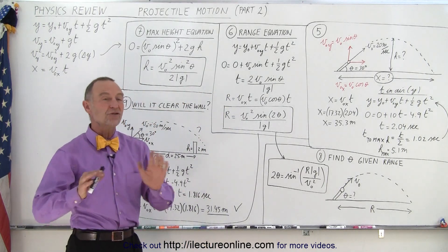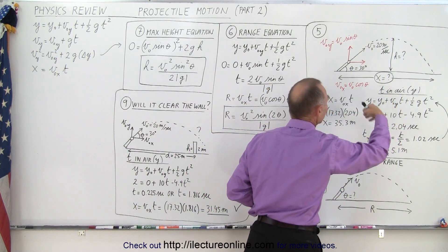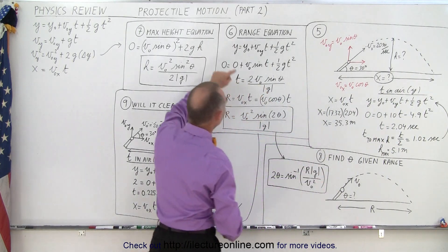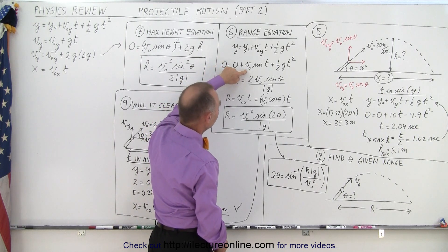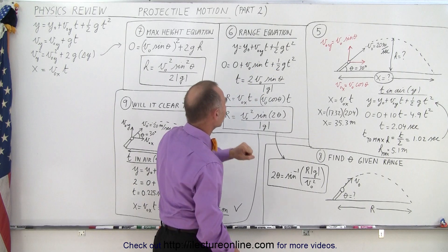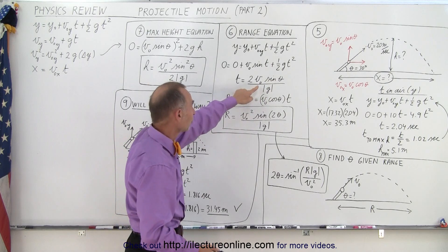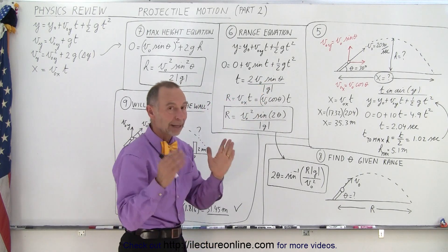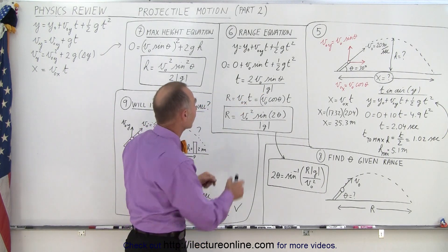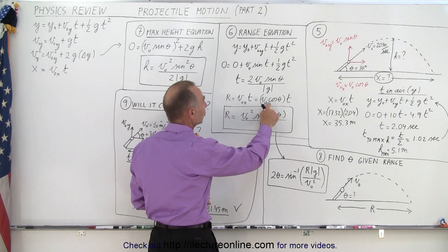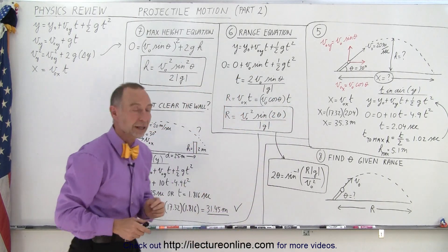We can also solve for a general equation. Instead of plugging in numbers, we keep things in terms of initial velocity, the angle, and so forth. This equation becomes: final height equals initial height plus initial velocity in the y-direction times time plus one-half g t-squared. Solving for time in general, we get an expression: time equals twice the initial velocity times the sine of the angle divided by the absolute value of g. Then distance equals velocity times time, so we take the velocity in the x-direction — v-initial times the cosine of theta — and multiply by that time.